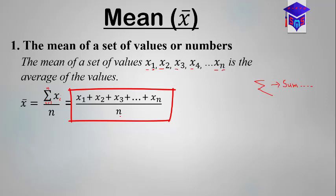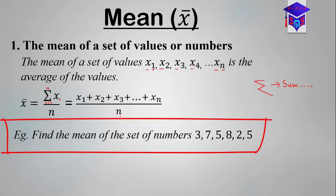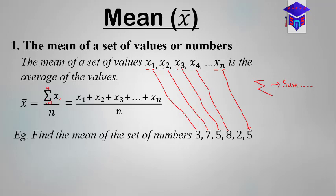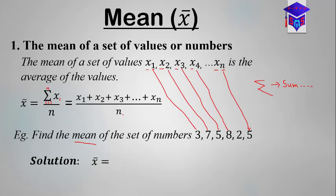Now let's take a sample example. Find the mean of the set of numbers: 3, 7, 5, 8, 2, and 5. We want to compare these to what we have in our formula — these are the x values. So this is x1, this is x2, this is x3, this is x4, this is x5, and this last one is xn. To find the mean you simply add all these x values and divide by the number of x values.